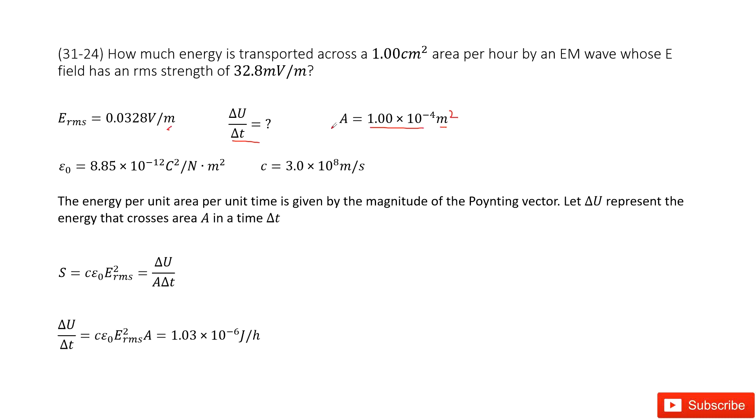In this case, we can see delta U over delta T. Very straightforward, we can consider the Poynting vector. The Poynting vector definition is energy per unit area per unit time. So we can write it as delta U divided by A times delta T.